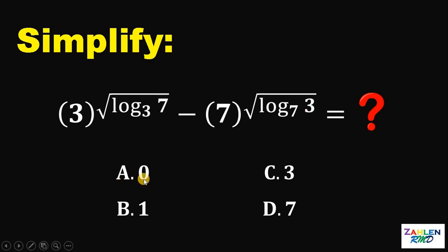Now here's our choices. Letter A is 0, letter B is 1, letter C is 3, and letter D is 7.